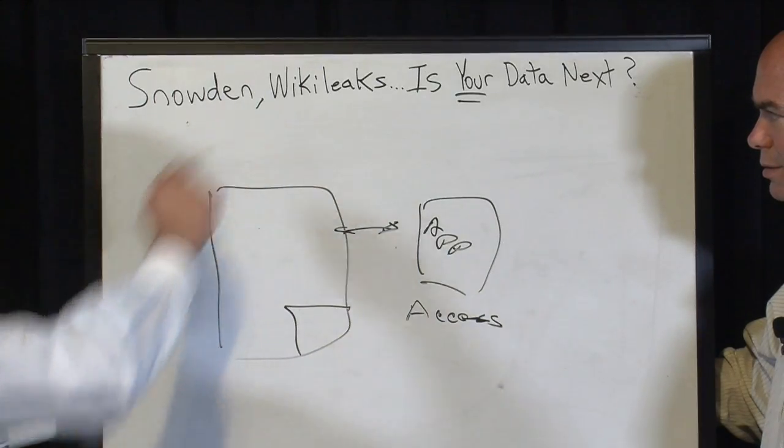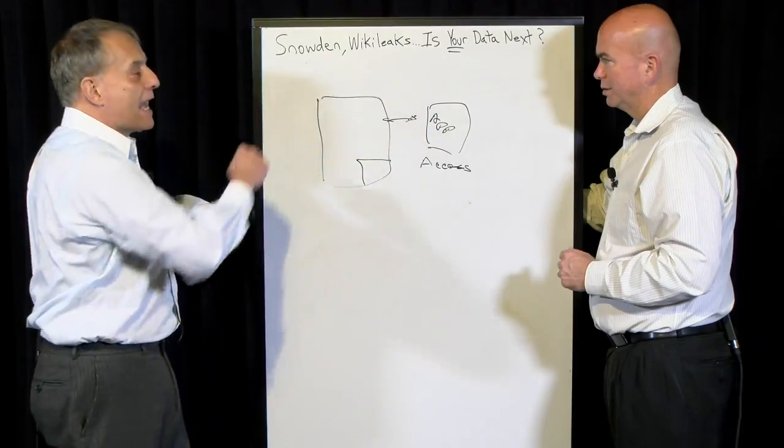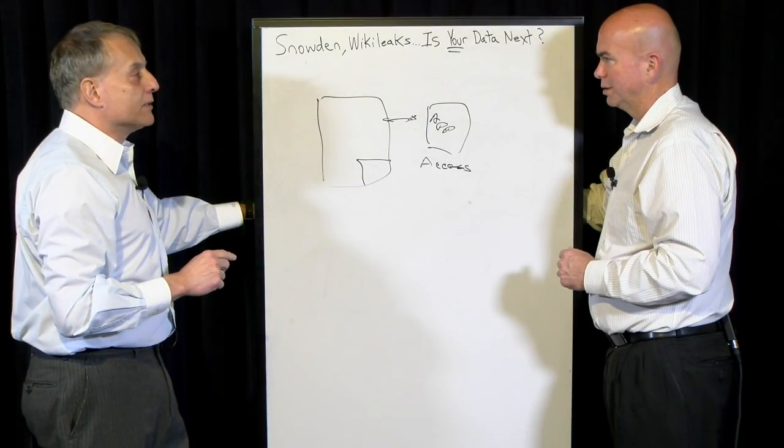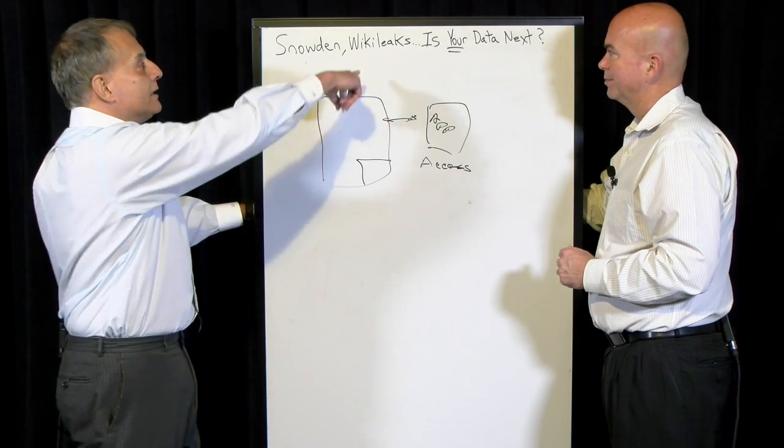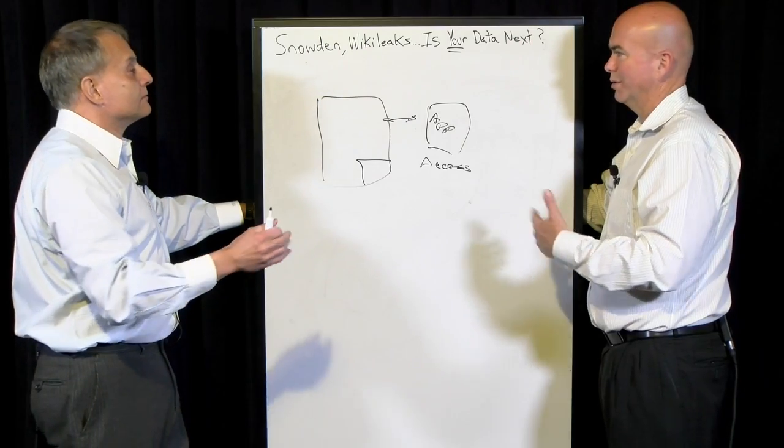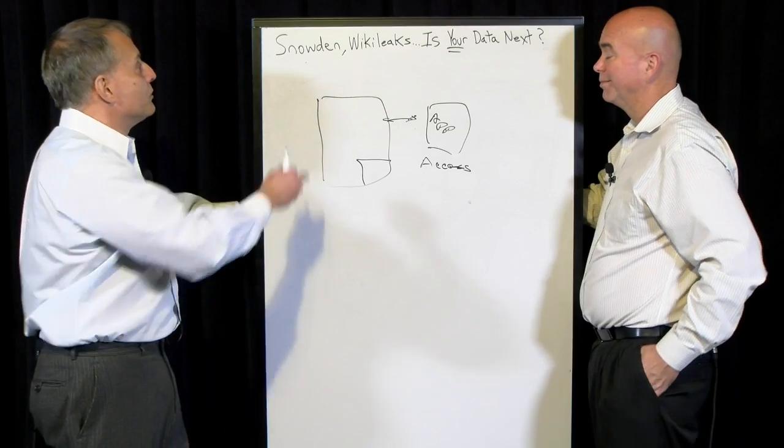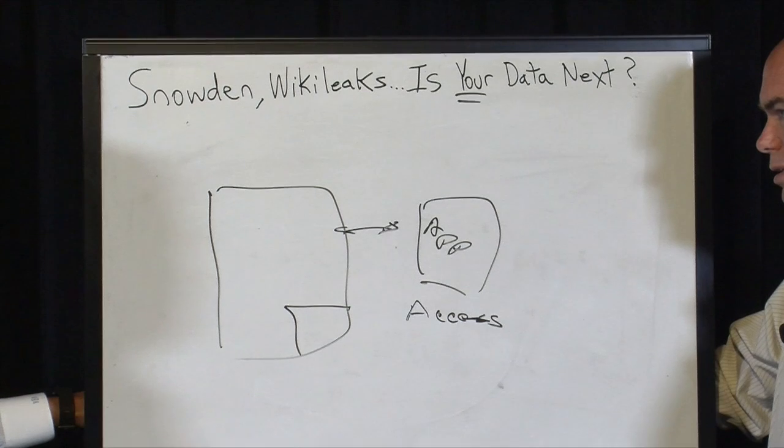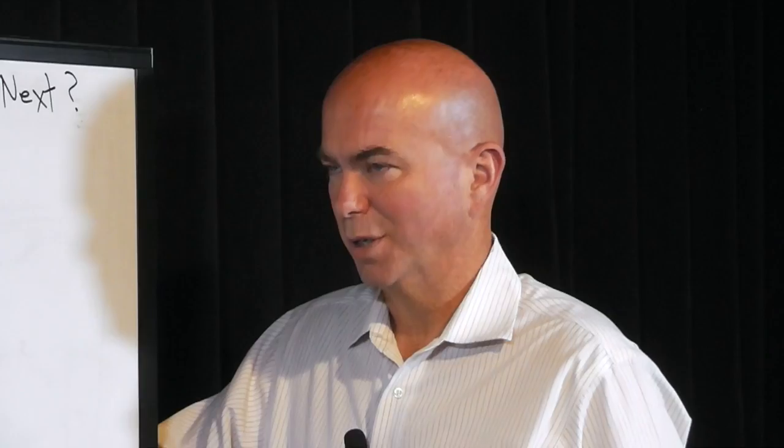But the other thing that allows Snowden and WikiLeaks, these kind of hacks, they don't happen in 15 minutes. They don't happen in an hour. WikiLeaks was 250,000 documents across a broad range of servers. So it took time, obviously. Snowden, we don't know how many it was, but again, across a broad range of servers. So you can't do that in an instant. Which means that this thing, doing its job based on the policies you've set, can figure out that there's something suspicious going on.